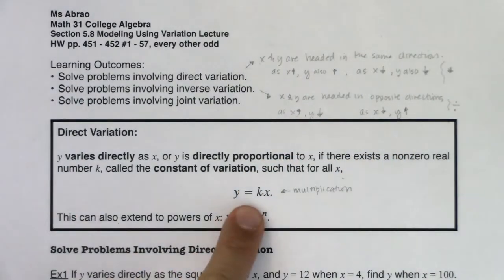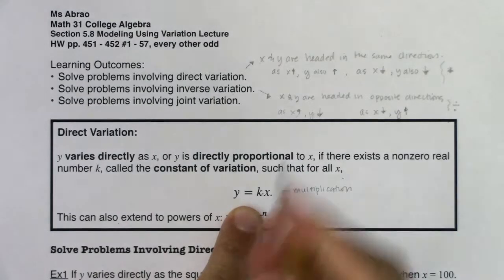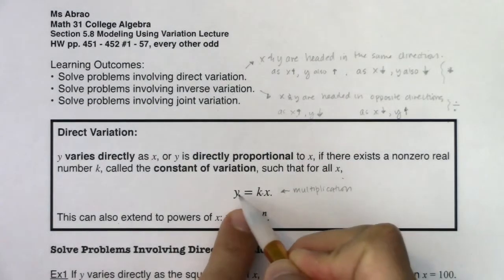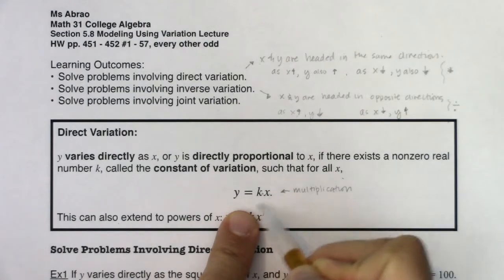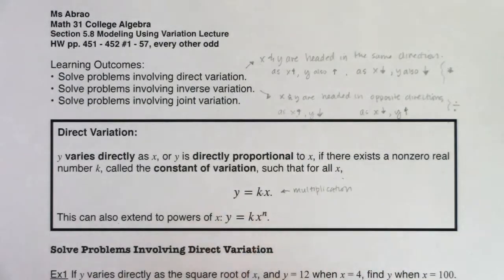So this is an example of direct variation. We have direct variation between y and x. As x gets larger, y will get larger. There's a constant of proportionality here. And we'll figure out what that is for our particular problem. But that's your basic direct variation formula.